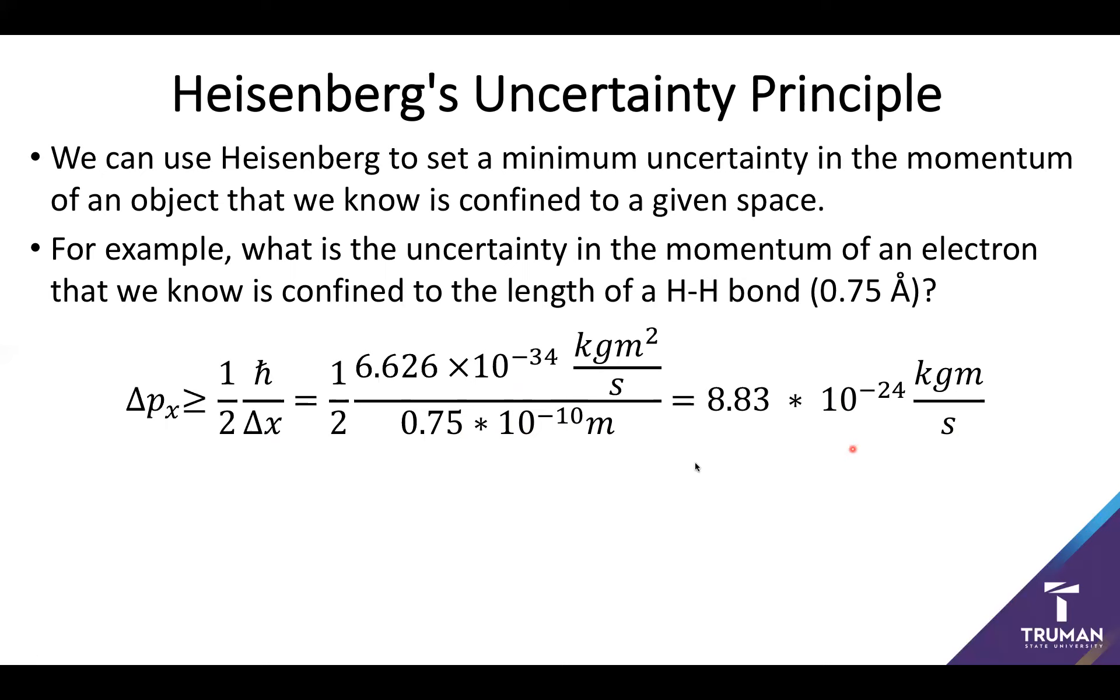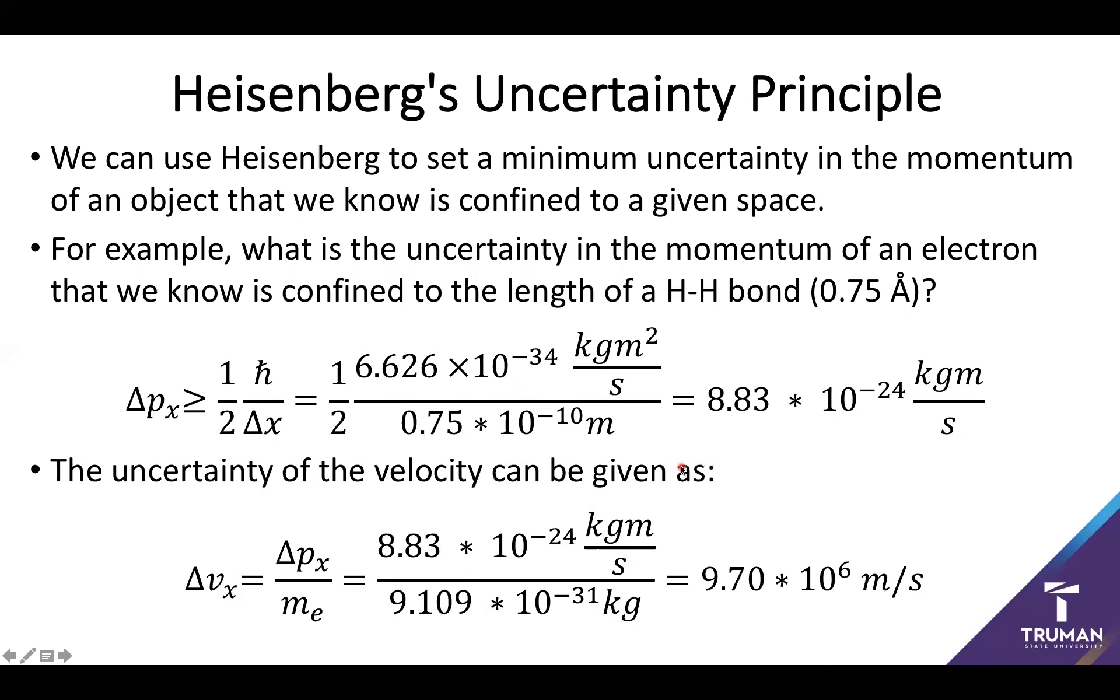So let's go ahead and kind of translate this into velocity. So in velocity space, I can get to velocity simply by taking my momentum divided by the mass of the particle, as I said, in this case, we're dealing with an electron. So I'm going to divide my new uncertainty of the momentum by the mass. And this gives me an uncertainty in the velocity of an electron of about 10 to the seventh meters per second.